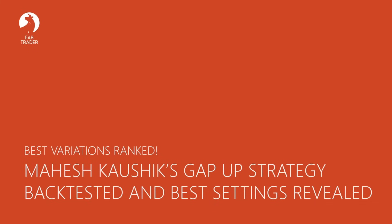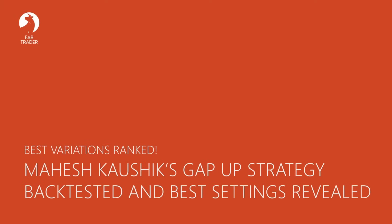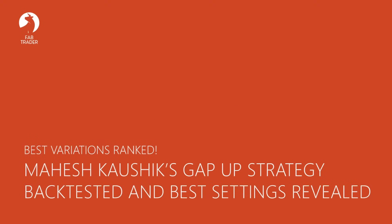I decided to put the strategy to the test by running it through my Python backtesting engine. I not only backtested the exact rules that Mr. Mahesh described, but I ran multiple variations of it, ranked them using risk-adjusted performance metrics, and found the best setting that gave me the most risk-adjusted return. In today's video, I'll share exactly what I found — the scenarios I tested, the metrics I used, and which variation gave the best risk-adjusted performance.